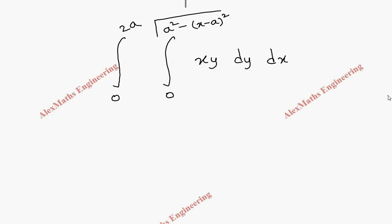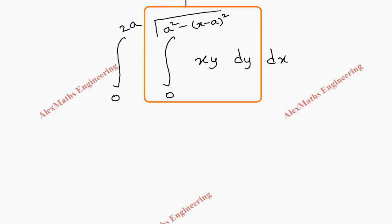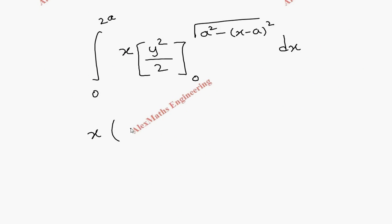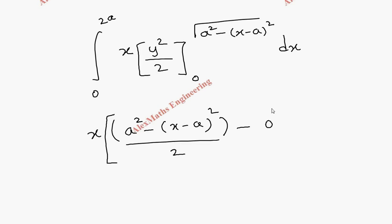Now we integrate first with respect to y, treating x as a constant. The integral of y is y squared over 2, evaluated from 0 to root of (a squared minus (x minus a) squared). Substituting the upper limit, the square and square root cancel, leaving (a squared minus (x minus a) squared) over 2. Substituting the lower limit gives 0, so we have the integral from 0 to 2a of that expression dx.